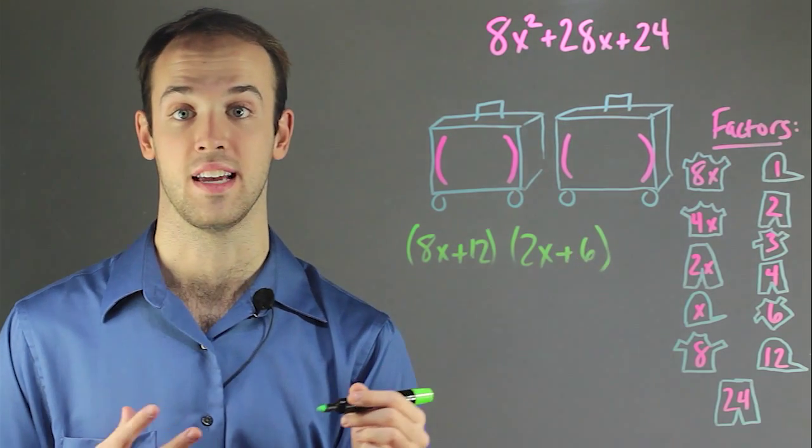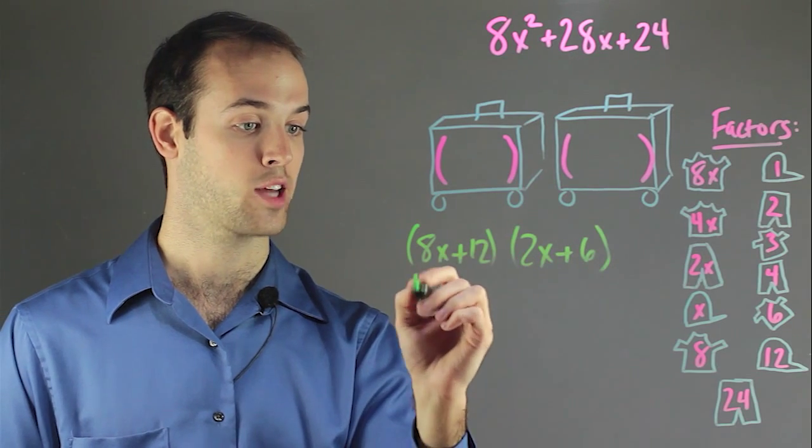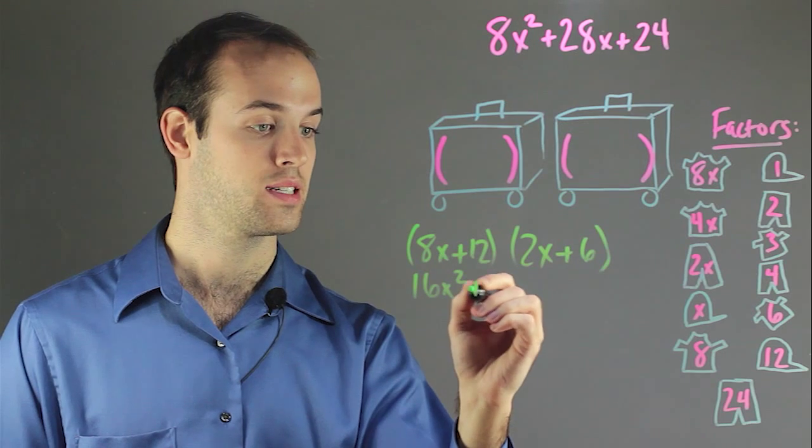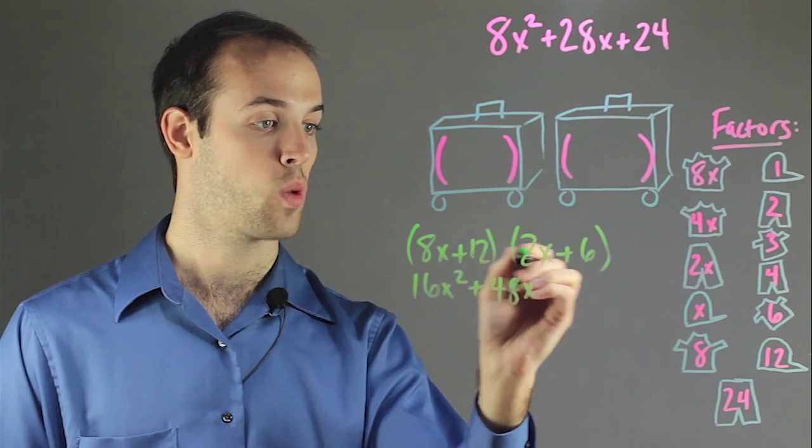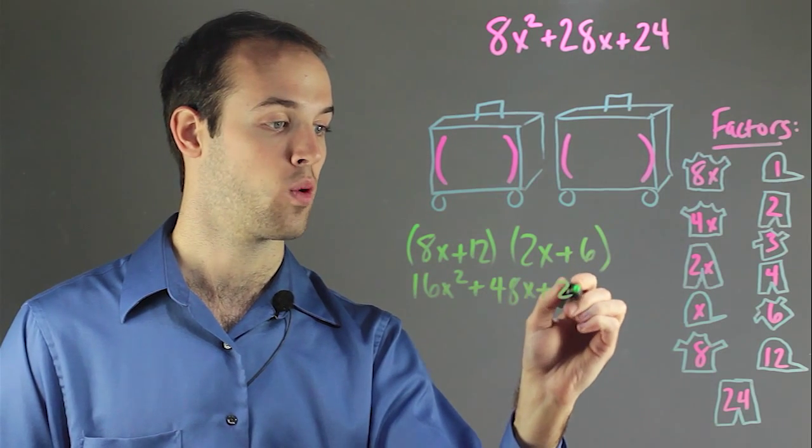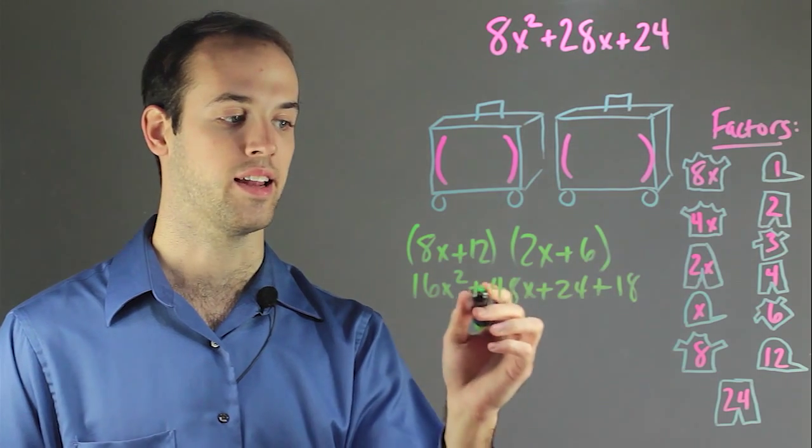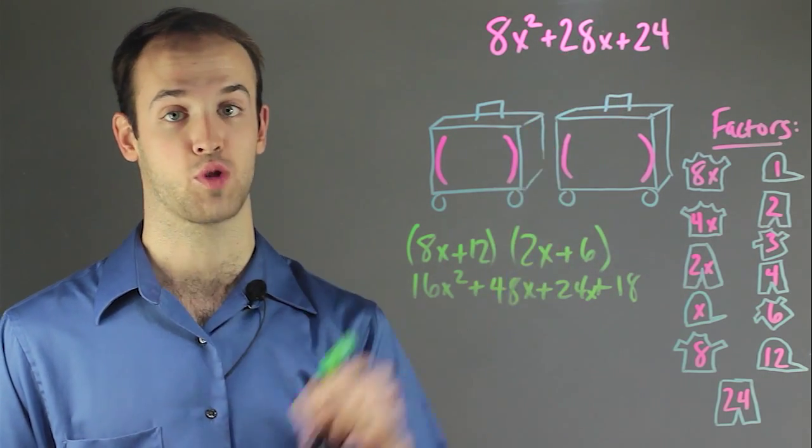And now let's foil that out to see if we're going to have enough clothes for the week. We would do 8x times 2x, which is 16x squared, then we would do 8x times 6, which is 48x, plus 12 times 2x, which is 24x, plus 18. And we can see that even if we combine these terms here in the middle, it is not going to equal this trinomial.